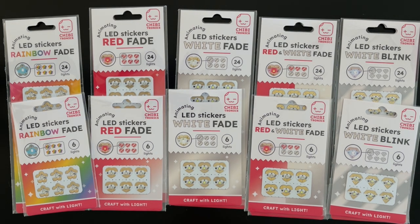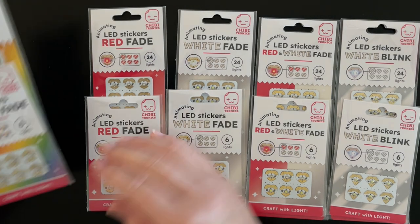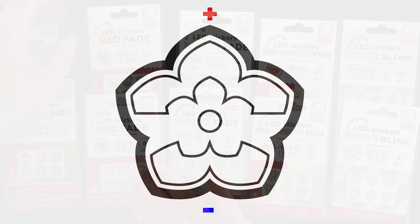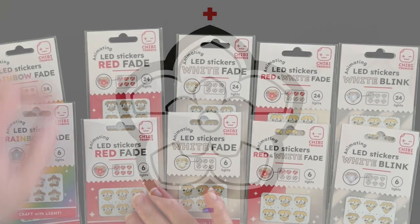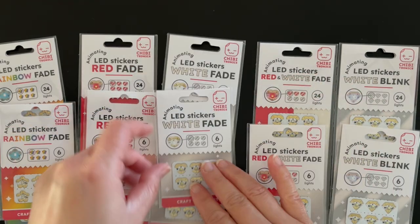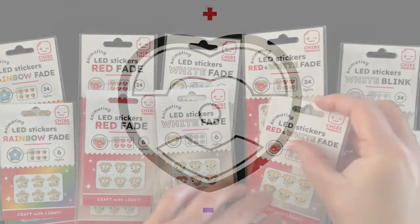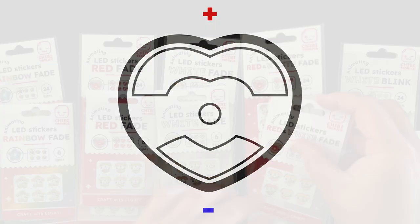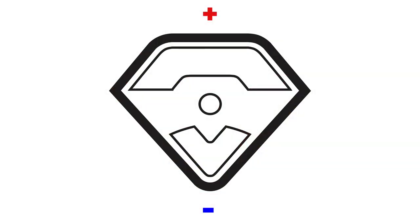Chibitronics is proud to announce the release of our first Animating LED Stickers. These stickers are available in packs of 6 or 24, and come in a flower-shaped rainbow fade animation, a heart-shaped fade animation available in red, white, or a mix of both colored stickers, and a gem-shaped white blink animation.